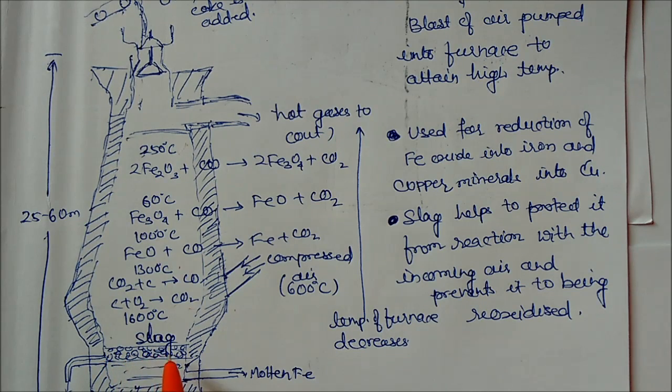Here compressed air is going inside at high temperature like 600 centigrade. We can see here some slag. Slags are lighter in molten metal. Molten metal is coming outside through this outlet and slag comes outside from this outlet. This is lighter and also prevents further oxidation.